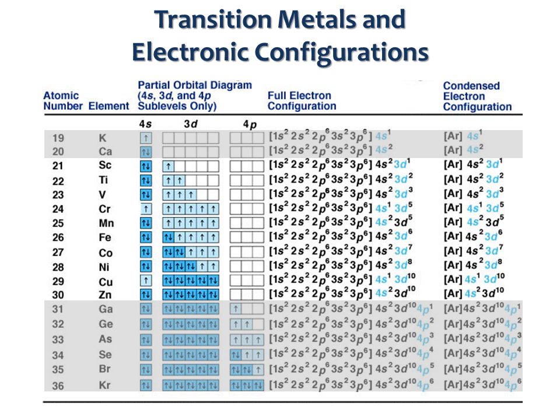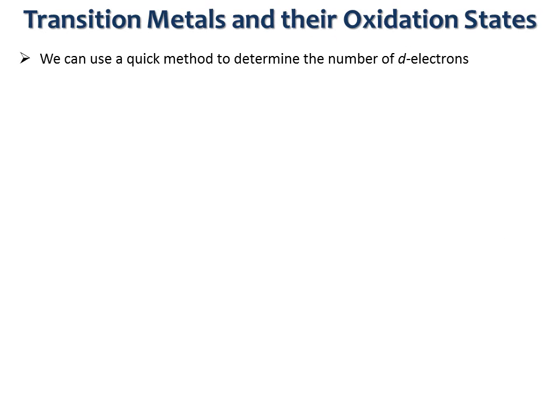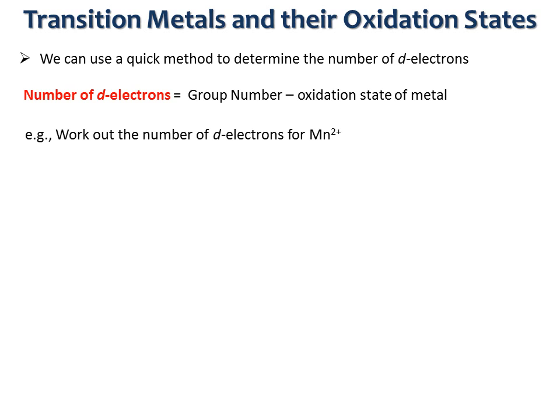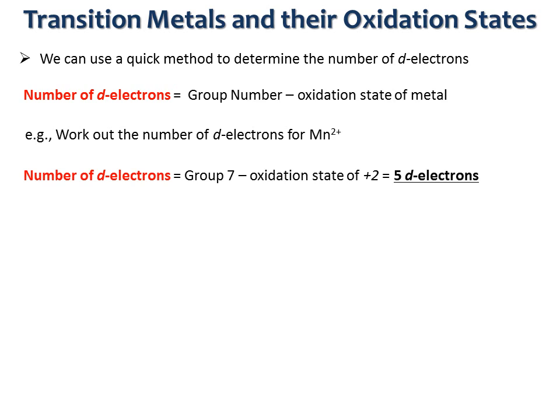Here's a full table of all the configurations written out. You can see that the 3D orbitals are filled to give a sequence of 10 elements — the d-block. There's no need to memorize this, as there's a much easier way to work out the number of d-electrons for a transition metal ion. We can use a quick method: the number of d-electrons is simply the group number minus the oxidation state of the metal. For example, for manganese 2+, manganese is in group 7 and the oxidation state is +2, so there are 5 d electrons — the valence electrons located in the outermost valence shell of the ion.